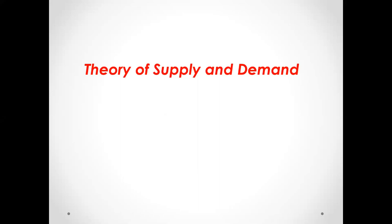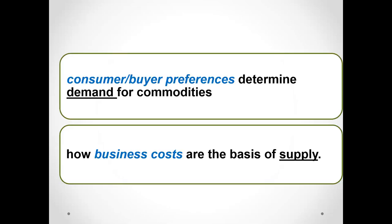The theories of supply and demand. When we talk about demand, we're looking at who is demanding goods and services in the market, which is basically the household or the consumer — buyers or consumers. They spend money to buy goods and services. Supply: who supplies these goods and services in the market? The firms or the producers. They produce goods and services.